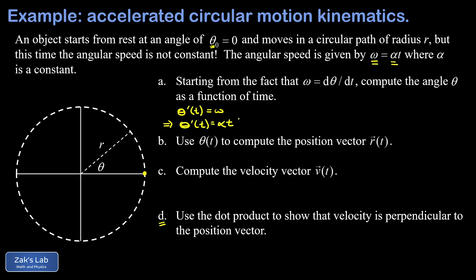Now, if I have the time derivative of my angle equal to alpha t, then I can find the angle itself by just guessing an antiderivative. And the antiderivative here is one half alpha t squared plus an arbitrary constant.